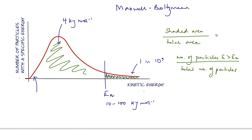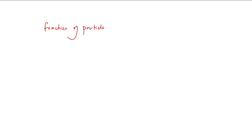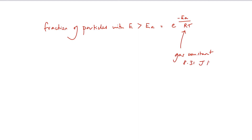Maxwell and Boltzmann derived a mathematical expression for this fraction — number of particles with energy greater than activation energy divided by the total number of particles. They said that the fraction of particles in a reaction vessel with energy greater than the activation energy was equal to e to the power of minus activation energy divided by RT, where R is the gas constant, 8.31 joules per kelvin per mole, and T is the temperature in kelvin.